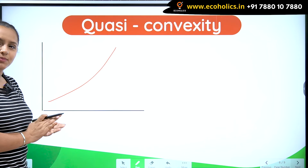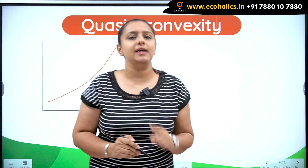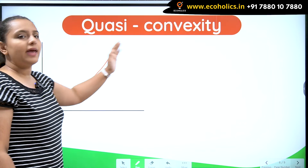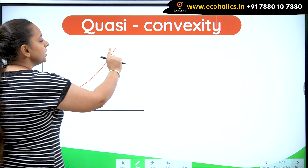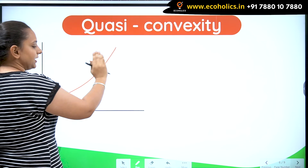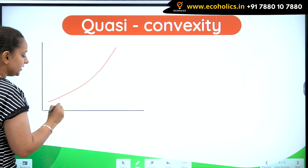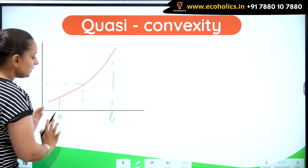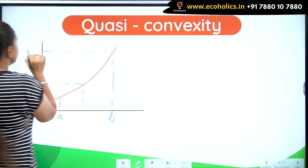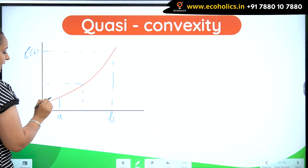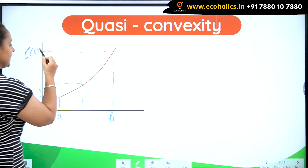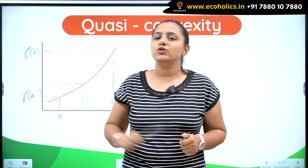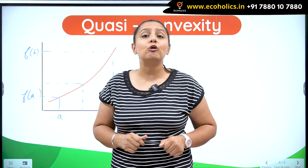This is similar to what you also saw in the video of quasi-concavity. Again, as you can see, this is a quasi-concave curve but also a monotonic increasing function. So this function was quasi-concave there, but it also satisfies the conditions of quasi-convexity — any point between a and b will always be less than f(b), which is the maximum value. So it can definitely happen that a function which is quasi-concave can also be proved quasi-convex.